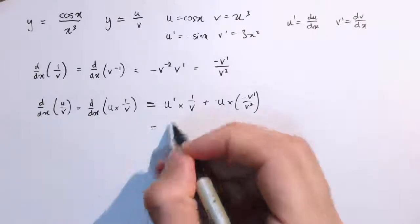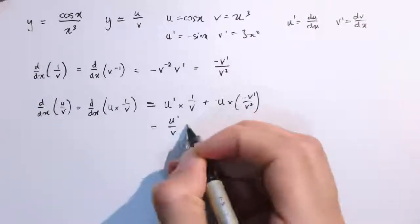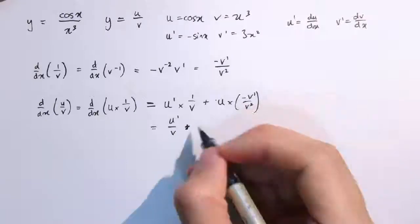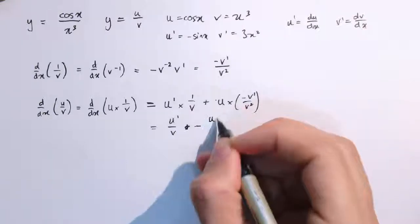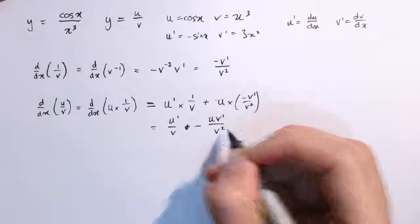So this one is u dashed over v, and this is, well I say plus here, but actually there's a minus here, so let's say minus u v dashed over v squared.